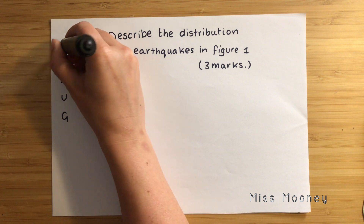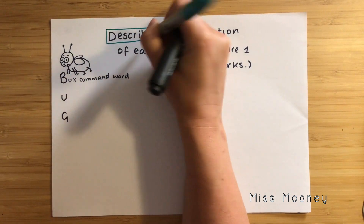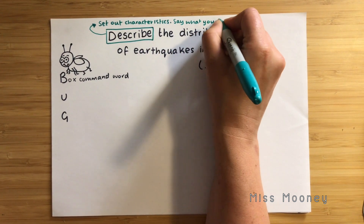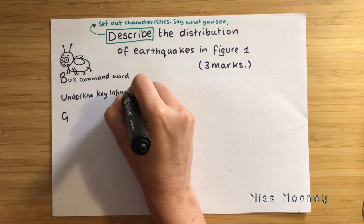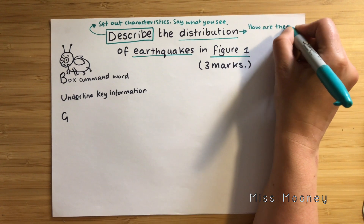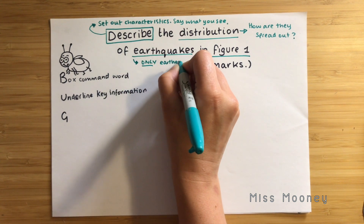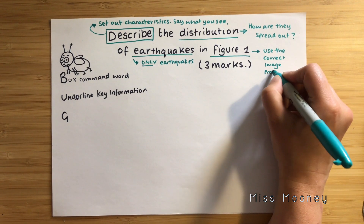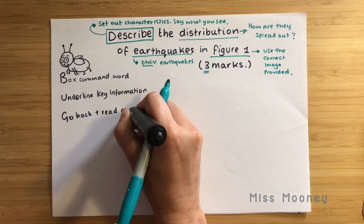Firstly we need to BUG the question. The B means box the command word — in this case we want to box the word 'describe.' Make sure you know what the describe command word means. The U means underline the most important information you'll need to answer the question successfully. In this question you must only talk about the distribution of earthquakes and you need to make sure you're only using figure one. This is particularly important because in an exam the map may have other information which could confuse you. Finally, it's three marks so you should spend about three minutes on this question. And the G just means go back and read the question over again.